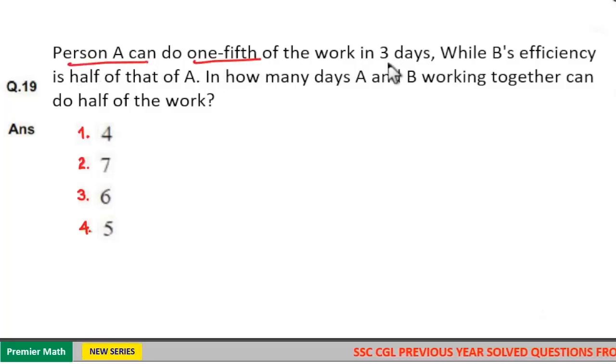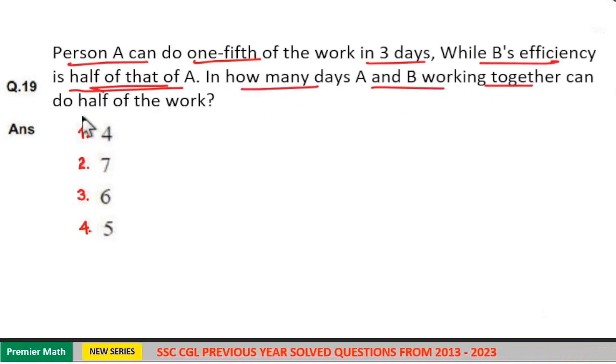Person A can do one-fifth of the work in three days, while B's efficiency is half that of A. In how many days can A and B working together do half of the work? Here, one-fifth of the work